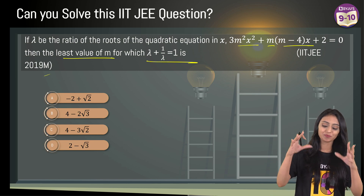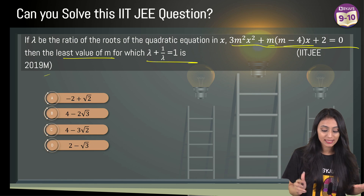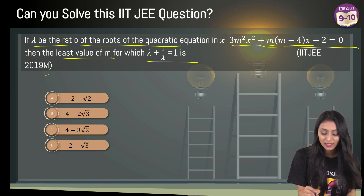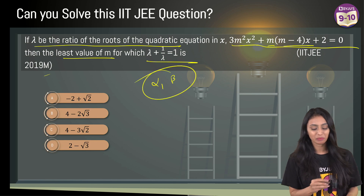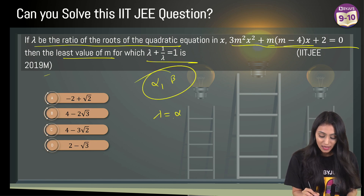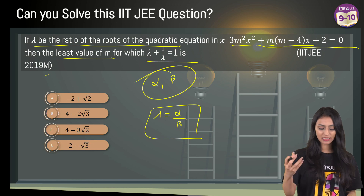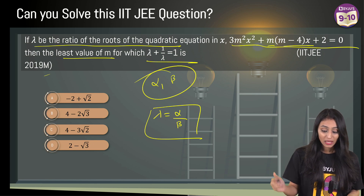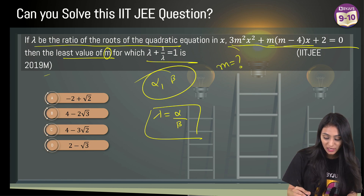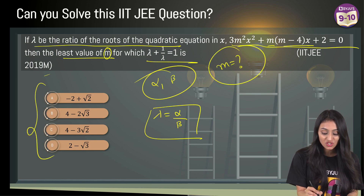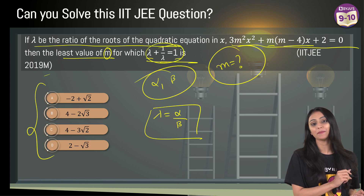Let's understand this. This is our quadratic equation. The question says if lambda is the ratio of the roots — meaning if the roots are alpha and beta, then lambda = alpha/beta. We need to find the smallest value of m for which lambda + 1/lambda = 1. That is the condition given to us.